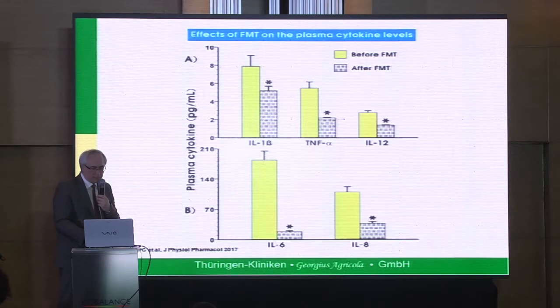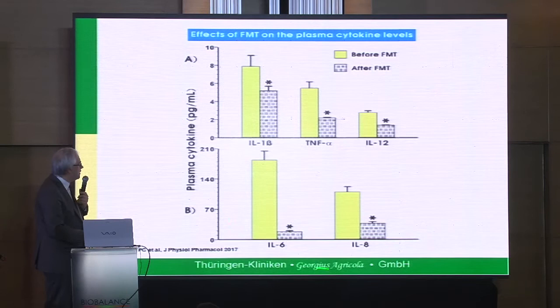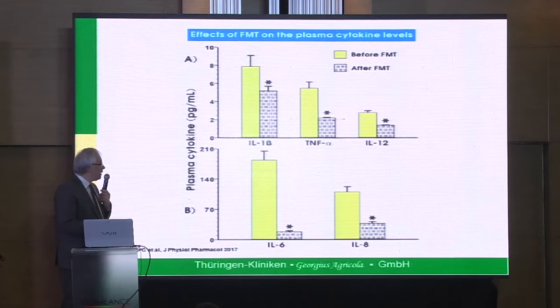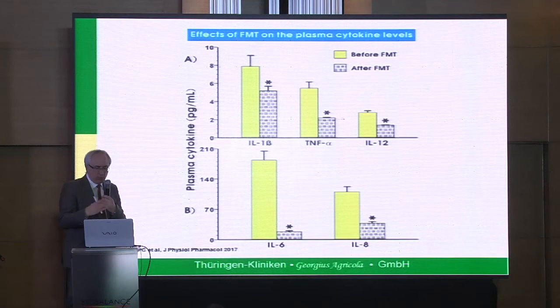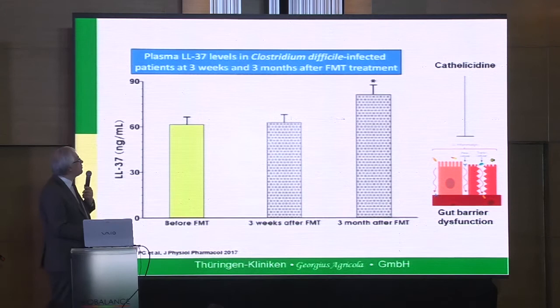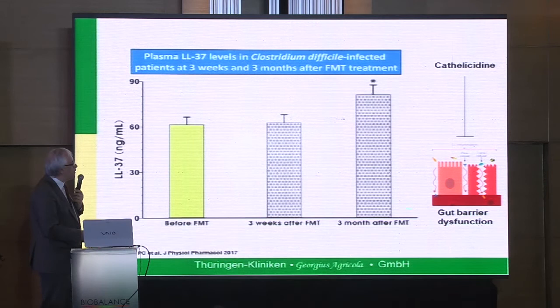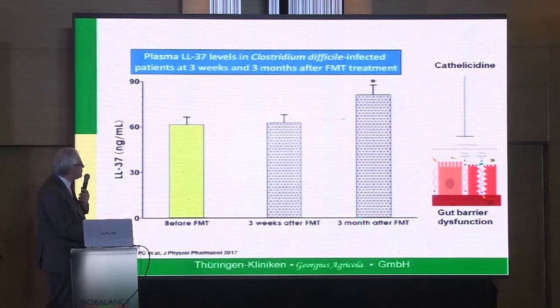We also looked at changes of pro-inflammatory cytokines. The microbiota used in FMT probably has strong anti-inflammatory effects because we have a significant decrease in the release of pro-inflammatory cytokines such as IL-1 beta, TNF-alpha, and IL-12. We also looked at the antimicrobial protein cathelicidin — an important molecule for restoration of gut barrier dysfunction. Not directly at three weeks, but three months after FMT, we have a significant increase of cathelicidin.